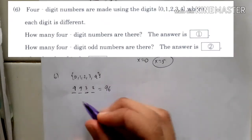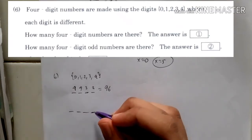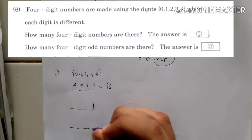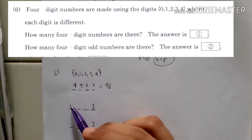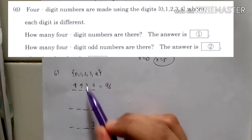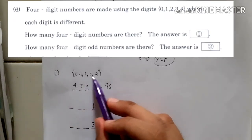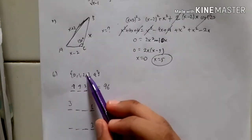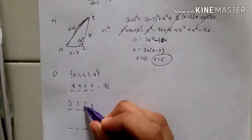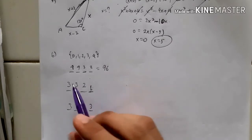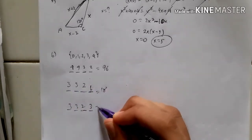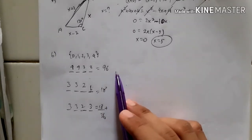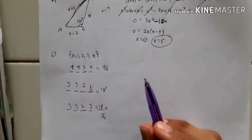Now how many 4-digit odd numbers are there? For the number to be odd, the last digit must be 1 or 3. Working with the front digit again: one digit is already taken for the last place, leaving 3 choices for the front. Then there are 3 remaining choices for the second digit, times 2. That gives 3 times 3 times 2 equals 18. Same for the other odd digit: 18 plus 18 is 36. So the answer is 96 total 4-digit numbers and 36 odd 4-digit numbers.